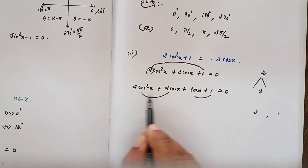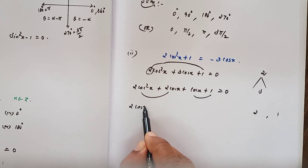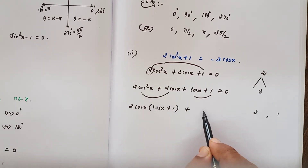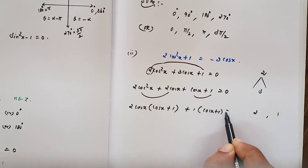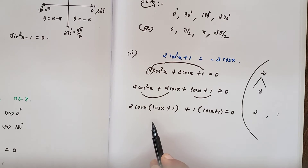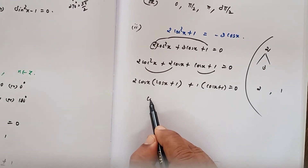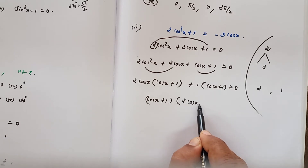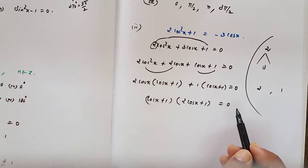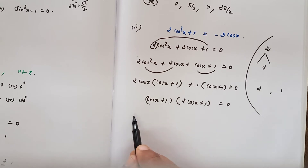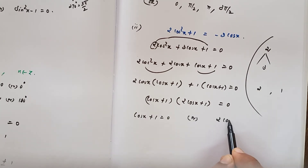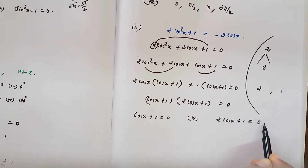Grouping the first two terms, take 2cosx as common to get 2cosx(cosx plus 1). In the last two terms, take 1 as common to get 1·(cosx plus 1) equals 0. Between these two groups, take (cosx plus 1) as common, giving (cosx plus 1)(2cosx plus 1) equals 0.